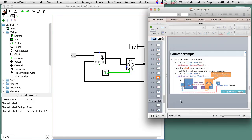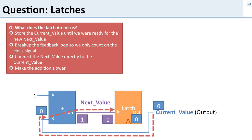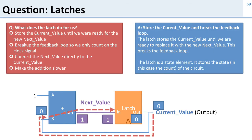So what does the latch do for us? It both stores the current value and breaks the feedback loop. We calculated the next value of 1 but kept outputting 0. When the clock comes, that 1 moves to the latch output and becomes the new current value.